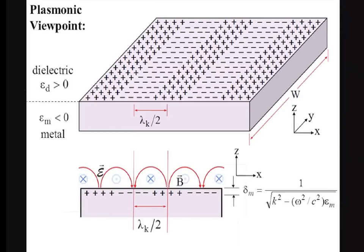I would like to describe how we can use a circuit approach to understand metal optics. The two viewpoints are contrasted here. This is a plasma wave, which is a space charge along the surface, and it runs along the surface in waves. You see that you have displacement current and magnetic fields and so forth.